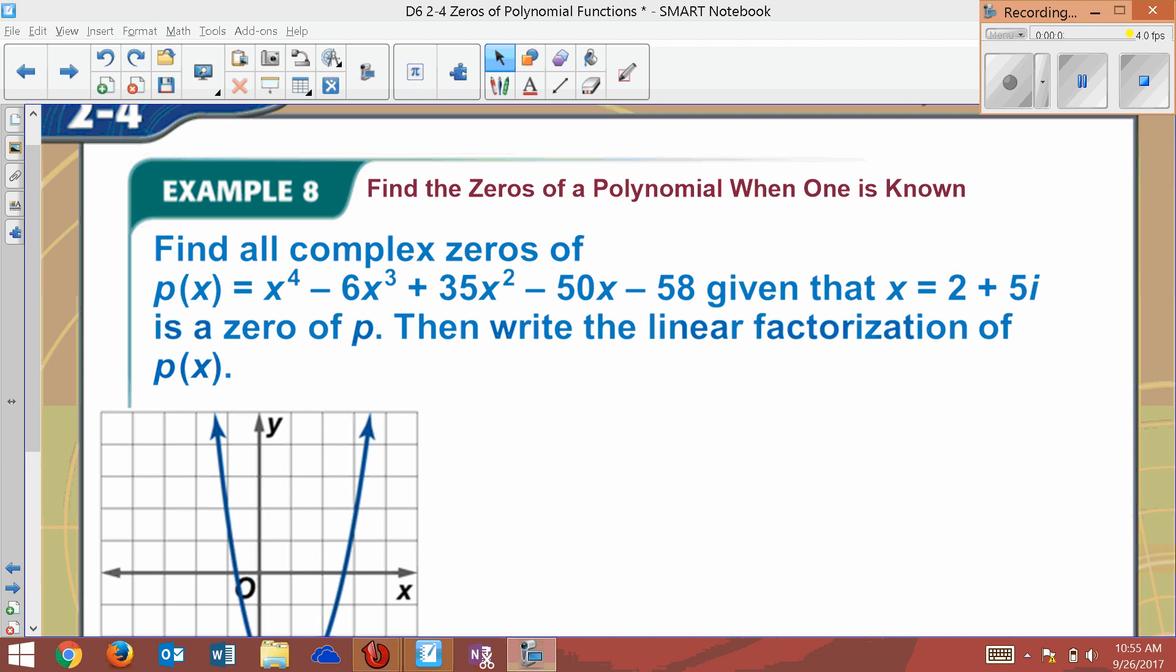All right, the last thing we're going to look at is this: how to find all complex zeros given that you have one imaginary. So since it's imaginary, I'm not going to use synthetic. I think that's a lot harder. But what I can do is if I know this is a zero, then I also know that that is also a zero.